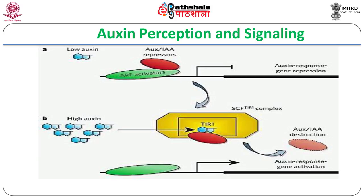Perception of auxin is known to occur by several receptors. One such receptor has been identified in the nucleus and is called TIR1, which is an F-box protein forming a component of the E3 ubiquitin ligase. This enzyme adds ubiquitin tags on target proteins and marks them for degradation.